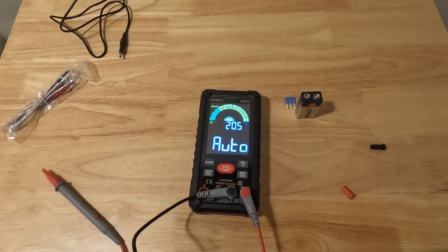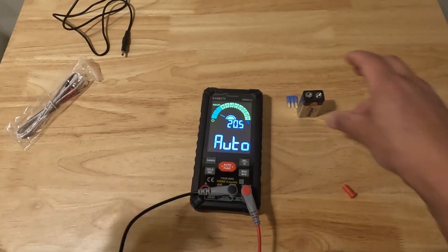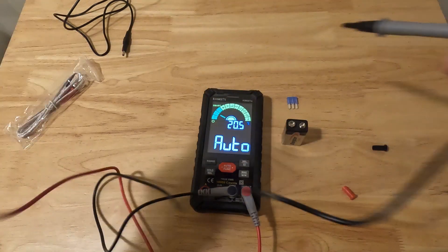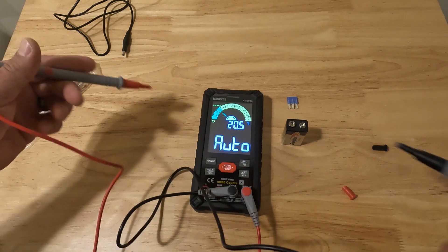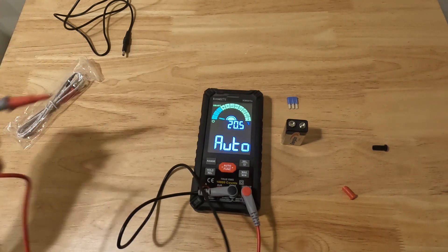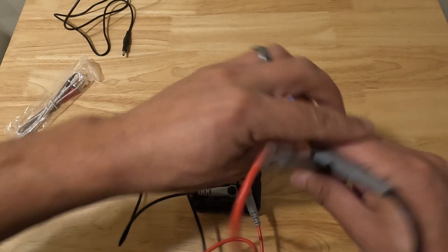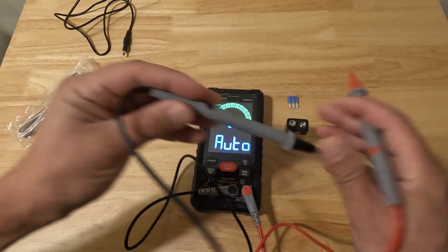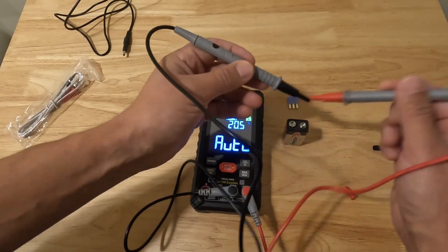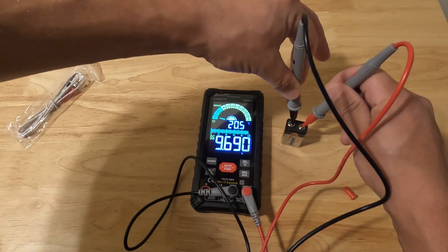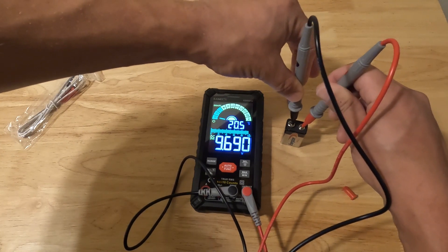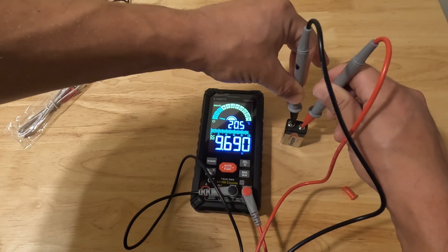The first thing we'll do is we're going to test this nine volt battery. On normal multimeters you would have to switch it over to DC or AC depending on what you're measuring. This just automatically knows. We'll just take a reading on this battery, and you can see it's reading 9.69 volts and it automatically switches over to DC.